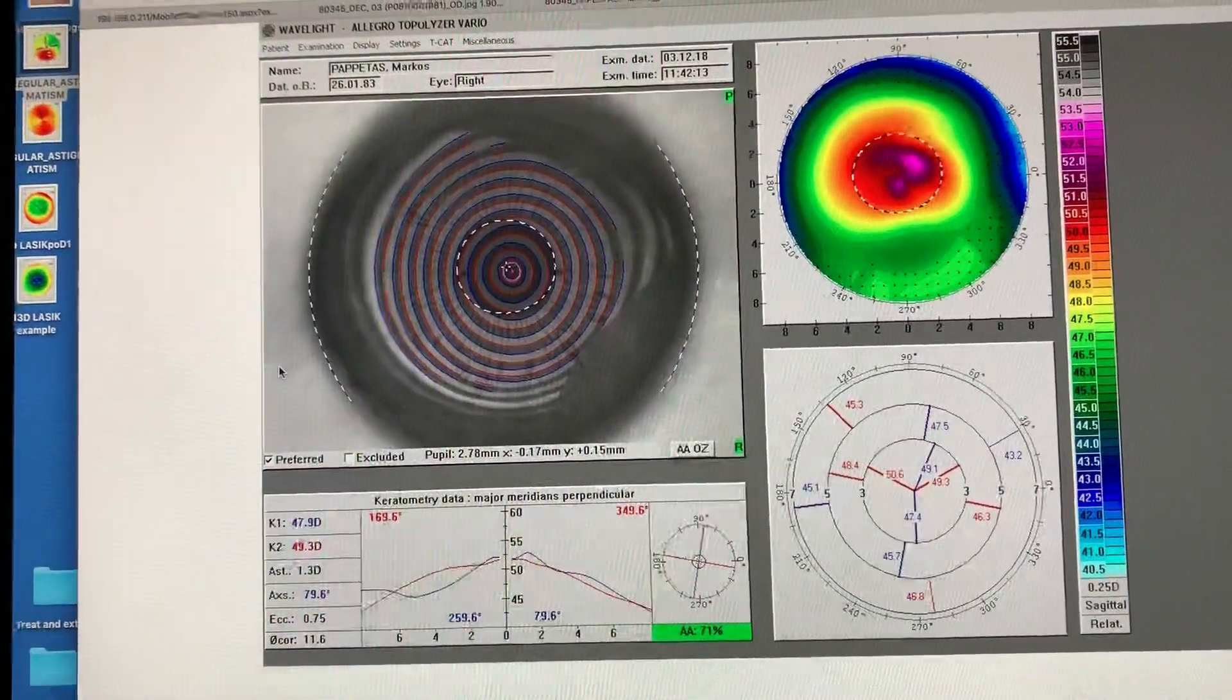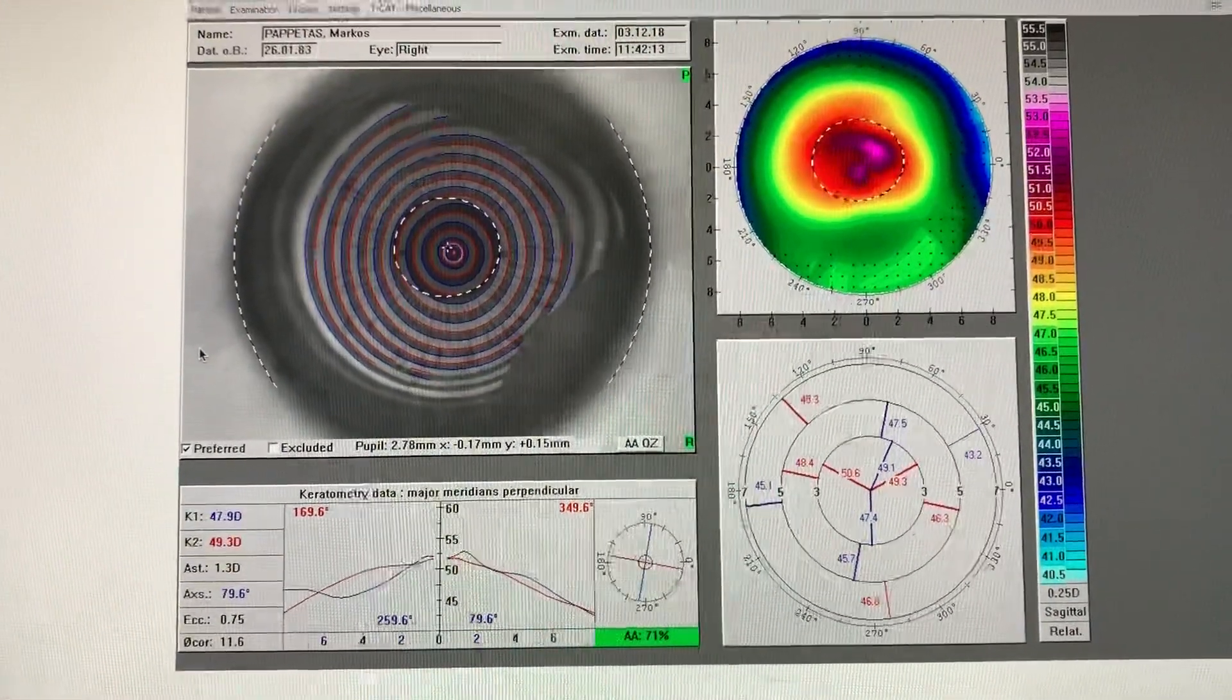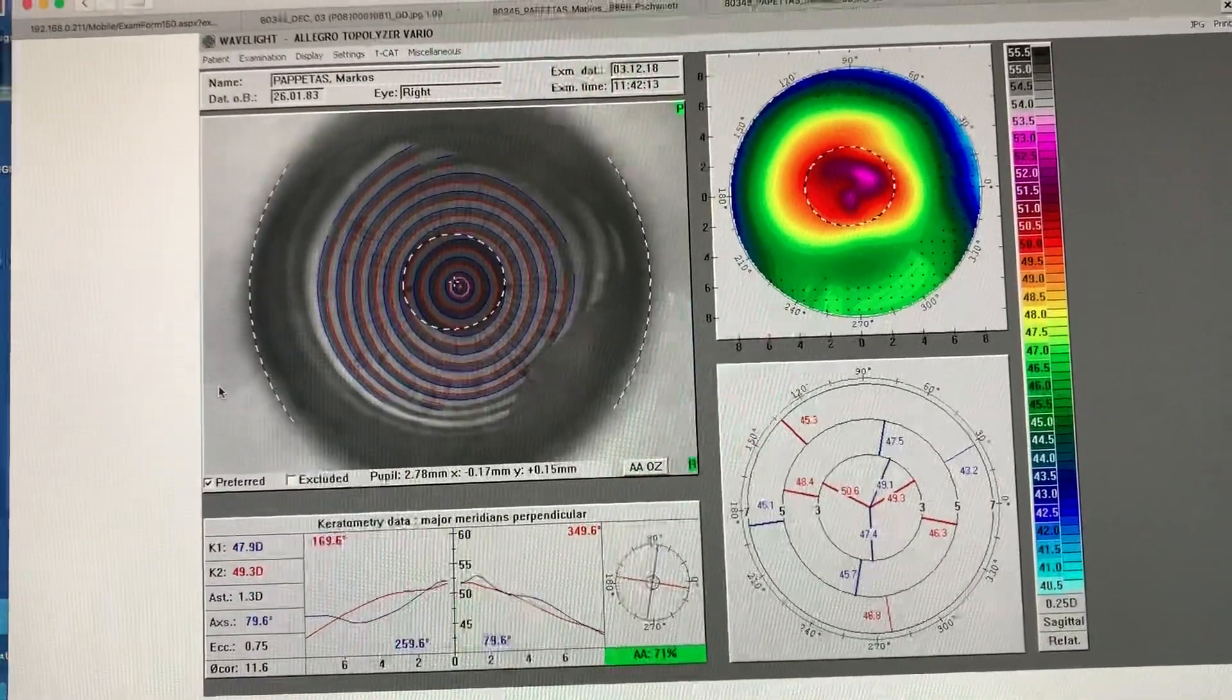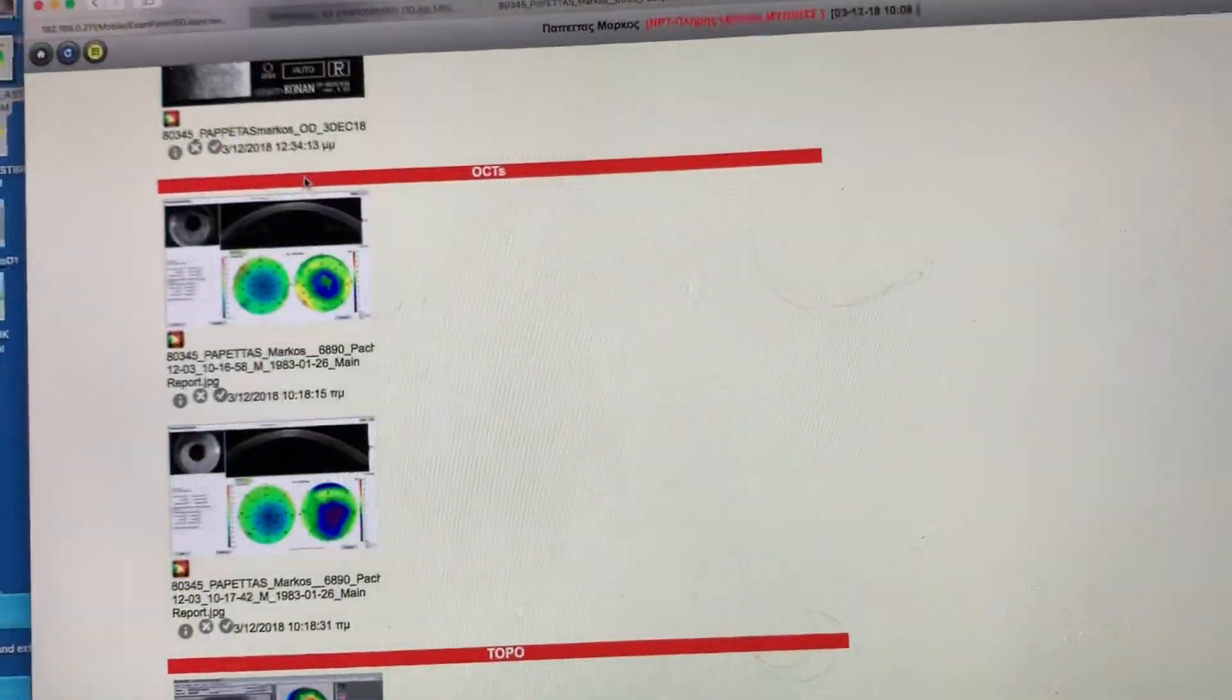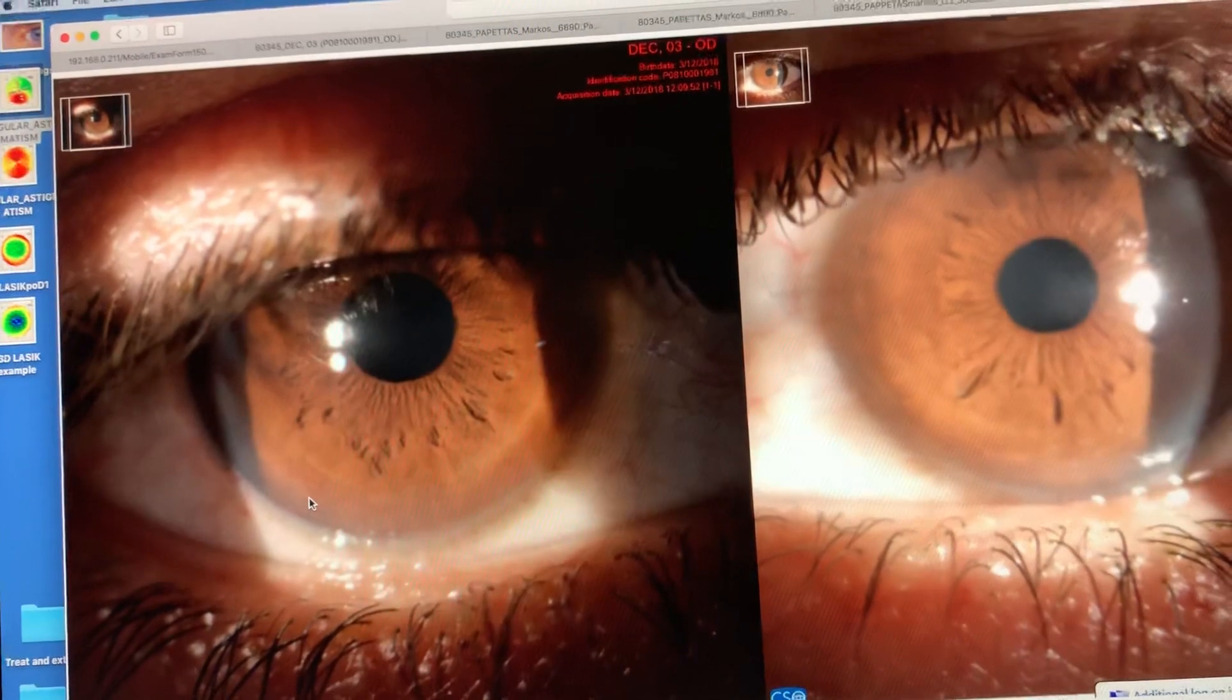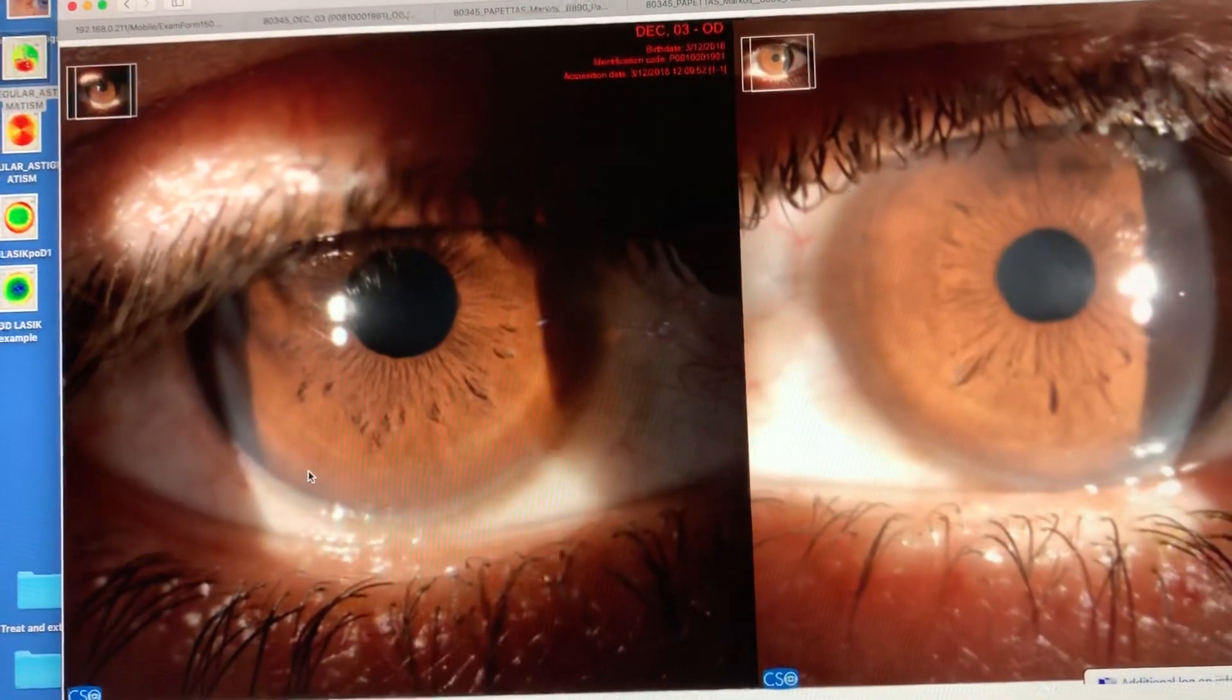So he came to us to plan actually a cornea transplant, since the cornea is too thin for any other intervention. But his vision has been quite stable and it corrects with minus 11, minus one at 150 to about 20/40 in the right eye, minus 13 and a half, minus half at 25 degrees, and also about 20/40.